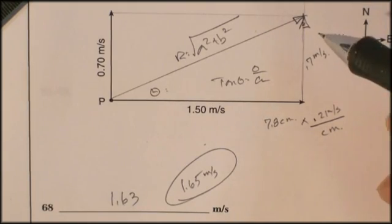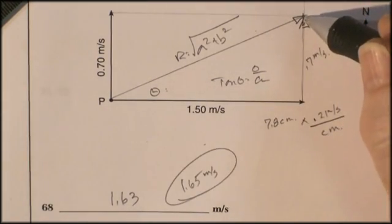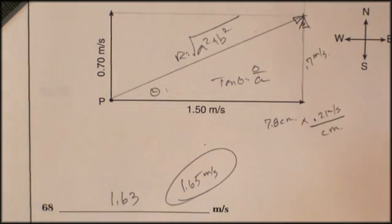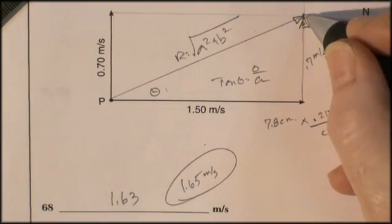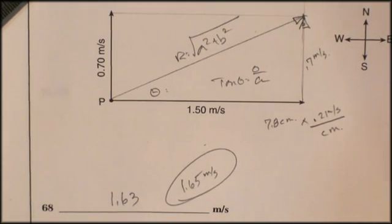When your teacher goes to grade this or whoever grades this goes, they will measure yours using your scale and they'll look for an answer. But certainly a couple of hundredths difference would be acceptable range of graphical mistake. All right, that's good.